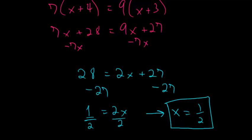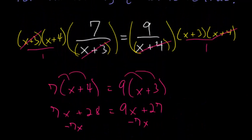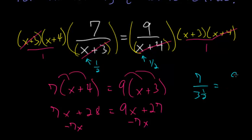A problem like this is fairly straightforward to check. If we go back to the original problem here, we just plug in 1/2 for each of these x values. We have 7 divided by (1/2 plus 3), which is just 3 and a half, and this is equal to 9 divided by (4 plus 1/2), which is 4 and a half.